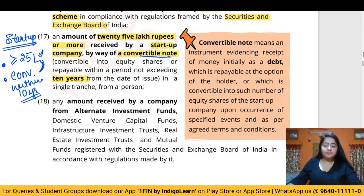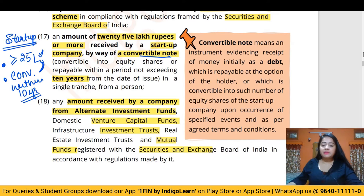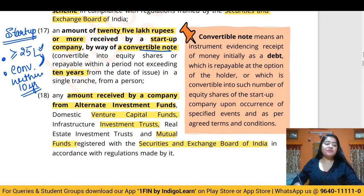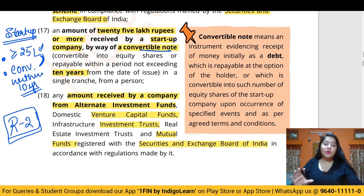Any amount received from an alternate investment fund, venture capital fund, investment trust, or mutual fund will not be considered a deposit, as these are all regulated by SEBI. With this, we have completed Rule 2 of the Acceptance of Deposits Rules 2014, which defines what is not a deposit. Any money received by the company outside this negative list will be considered a deposit and must comply with Sections 73 to 76A.